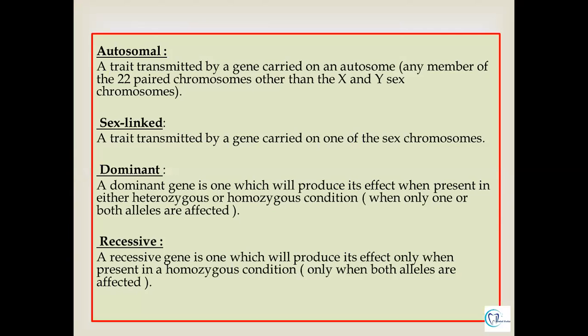Another category involves transmission through the autosomal chromosome or the sex-linked chromosome. Traits transmitted by the autosomal chromosomes, which are 22 pairs in number, will be autosomal transmitted diseases. Those transmitted by sex chromosomes will be sex-linked diseases. Under this category we have further subdivisions: dominant and recessive genes. The dominant gene produces its effect whether present in the heterozygous or homozygous form — meaning one or both alleles may be affected. It is considered recessive when only the homozygous condition is present, meaning both alleles are affected.